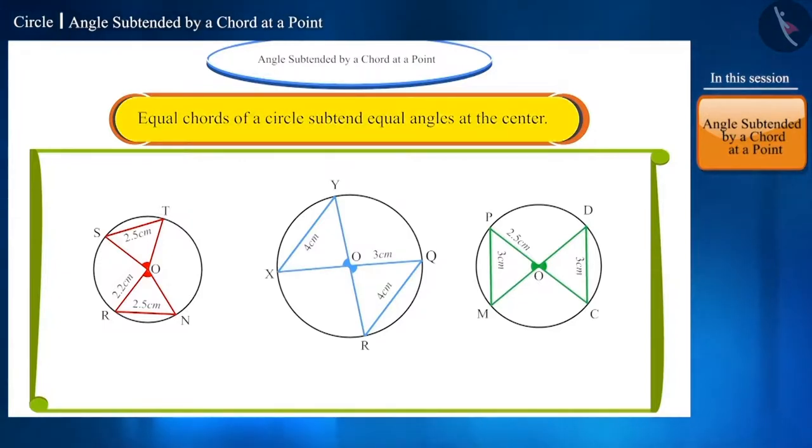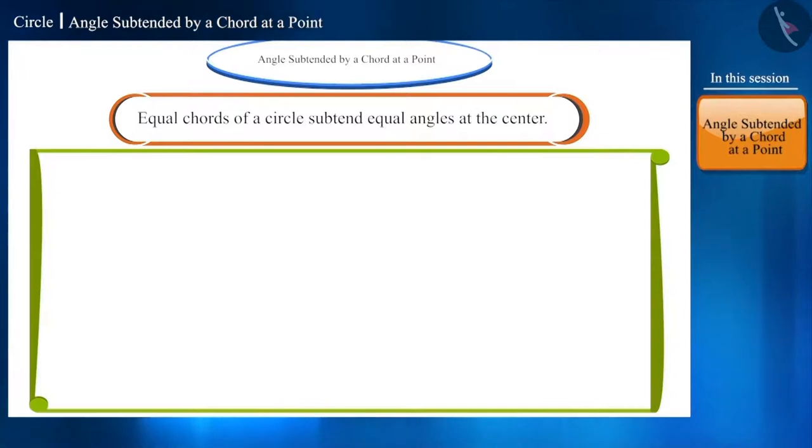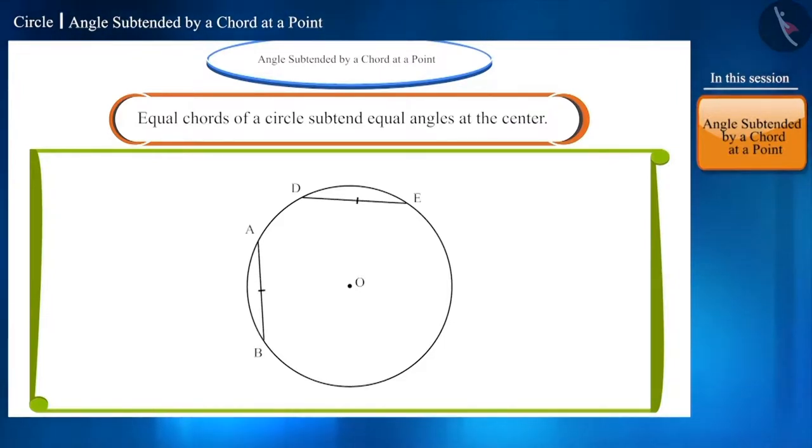This is a theorem. Let us prove it mathematically. According to the statement, draw a circle with center O whose two chords AB and DE are equal as given. We have to prove that angles AOB and DOE subtended at the center by these two chords are equal. Join these points like this.